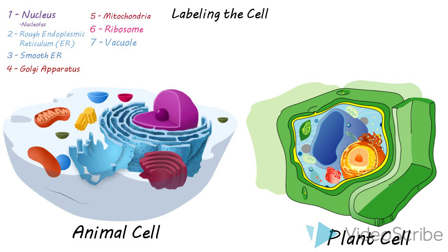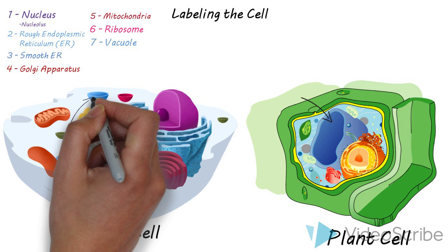Vacuoles. For the plant cell there's usually one large vacuole and then the animal cells you'll have smaller vacuoles that are sphere shaped.